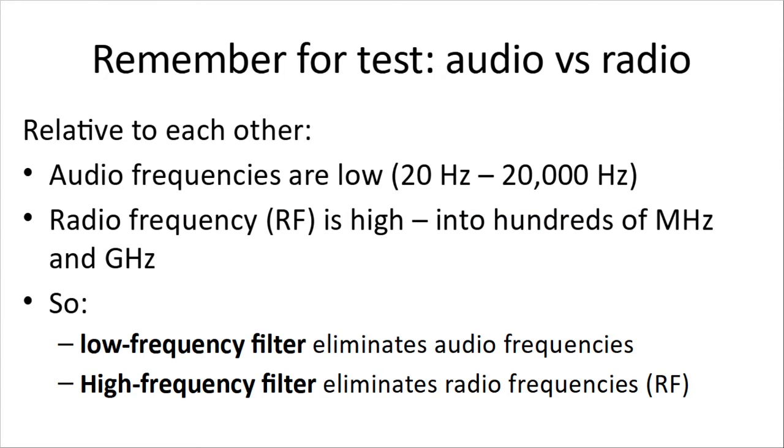Now, for the test, remember audio and radio. We've talked about this. Big difference between the two is the frequency with audio at lower frequencies and radio at higher frequencies. So the audio frequencies, 20 hertz to 20,000 hertz or 20 kilohertz. Radio frequency is high into the hundreds of megahertz and gigahertz. So a low frequency filter will clear out the audio frequencies. A high frequency filter will eliminate radio frequencies.